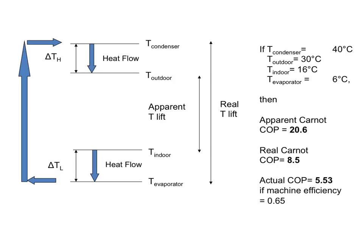Consider an air conditioner trying to pump heat from your cool house out into the high-temperature outdoors. You could use this temperature difference to calculate your Carnot coefficient of performance. However, that's not the temperature difference the machine actually feels. The cooling coils must be at a temperature lower than the house in order for heat to flow from the house to the coils, and the output temperature outside has to be hotter than the outdoor world in order for heat to flow from the coils outside.